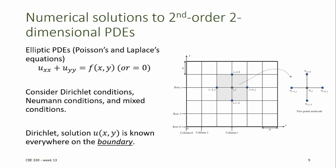To solve second-order two-dimensional PDEs, we'll divide the domain up into a grid of mesh points, as shown here. And for each point in the grid, we'll consider what we call a five-point molecule — that is, the solution at each point in the grid depends on the solution at the neighboring four points.